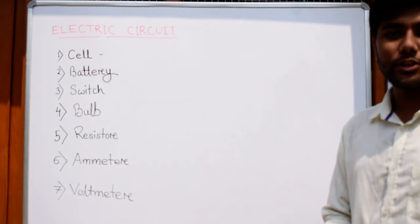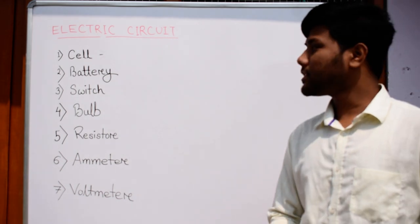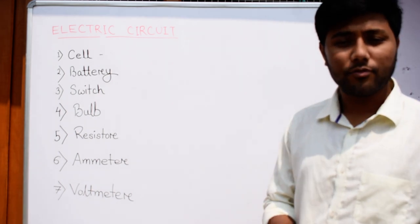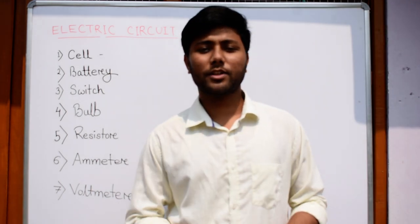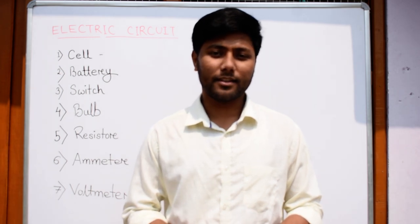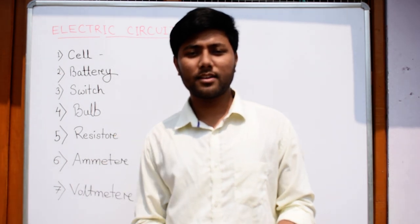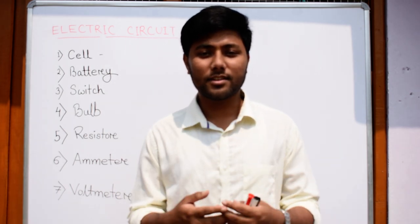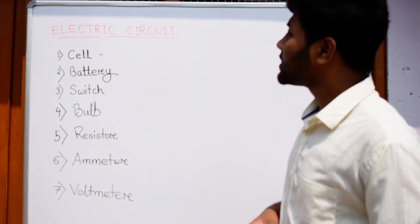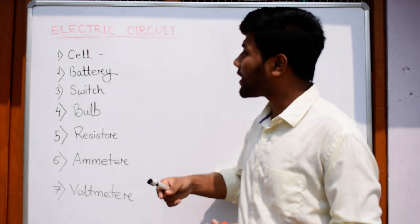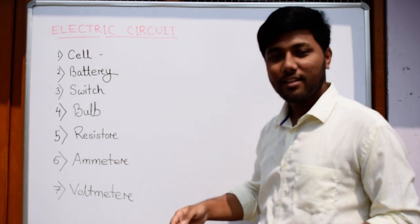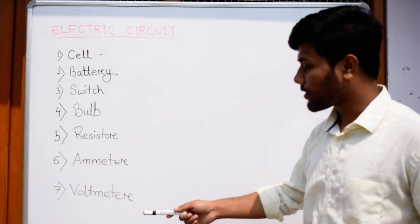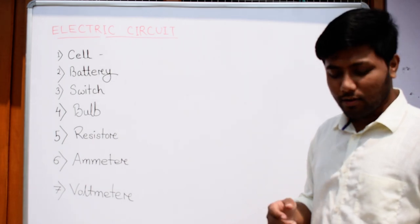Hello students, welcome to another video of this channel. Today we will discuss about electric circuit, how an electric circuit is formed, and what are the components of an electric circuit. As we know in our human body we have different parts like hands, eyes, nose, teeth, and hair. Similarly, in an electric circuit we have the cell, battery, switch, bulb, resistor, ammeter, and voltmeter.